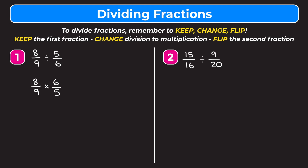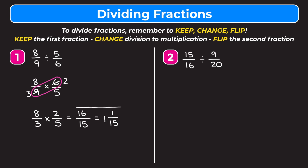Cross-reducing means simplifying any numbers that are diagonal from each other. Six and nine have a common factor of three, so we divide them both by three: nine divided by three is three, six divided by three is two. Now it's like eight over three times two over five. Multiplying straight across: eight times two is sixteen, three times five is fifteen. We get sixteen fifteenths, or as a mixed number: fifteen goes into sixteen one time with one left over, so one and one fifteenth.